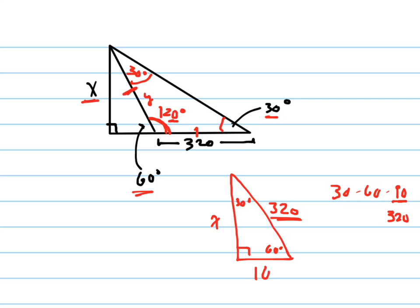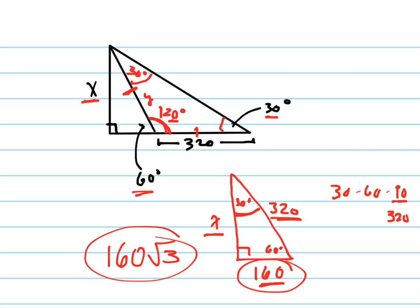Half of that, which is 160, is right here, across from the smallest angle. And to find this one, I multiply the smallest side by square root of 3. So 160 square root of 3 is what x equals.